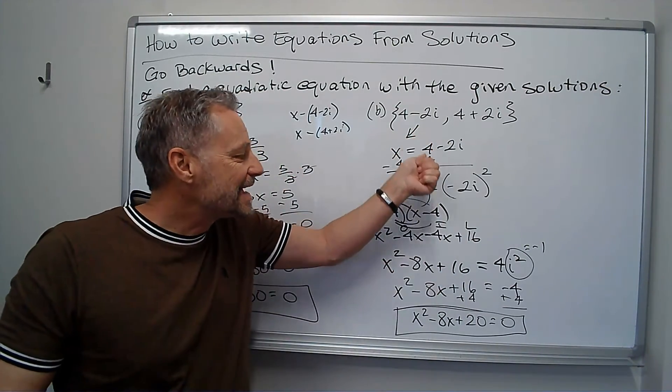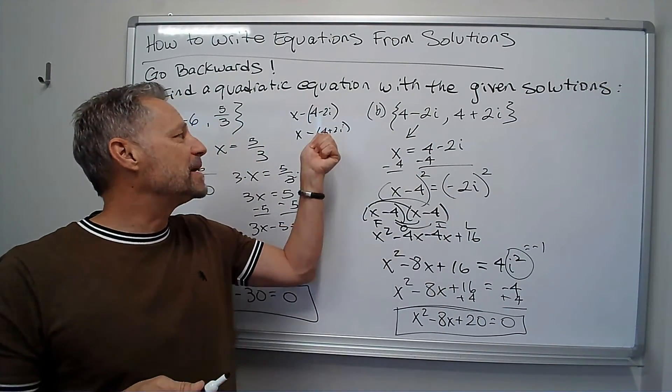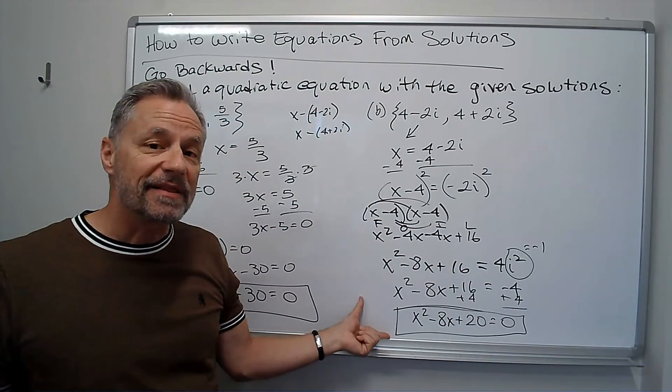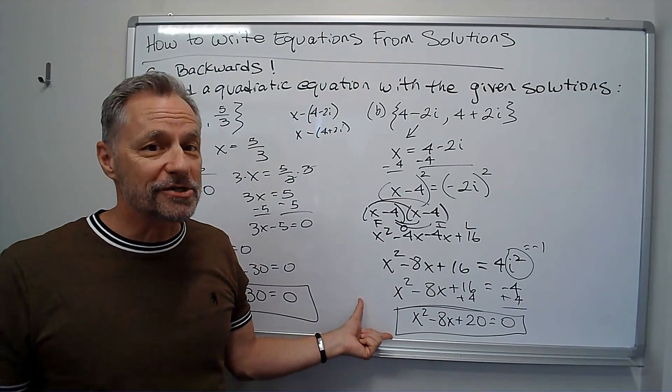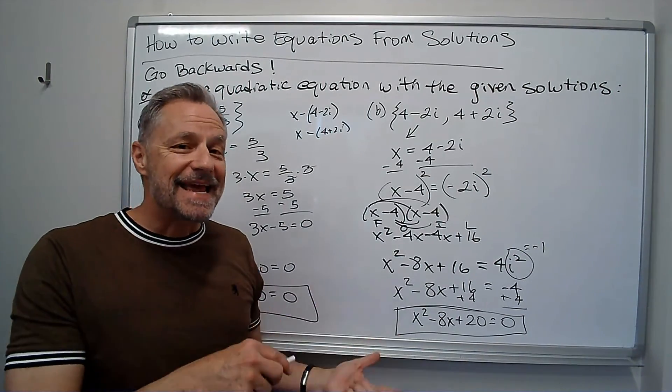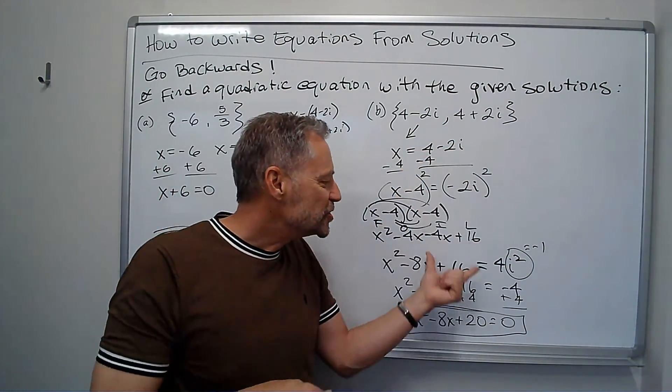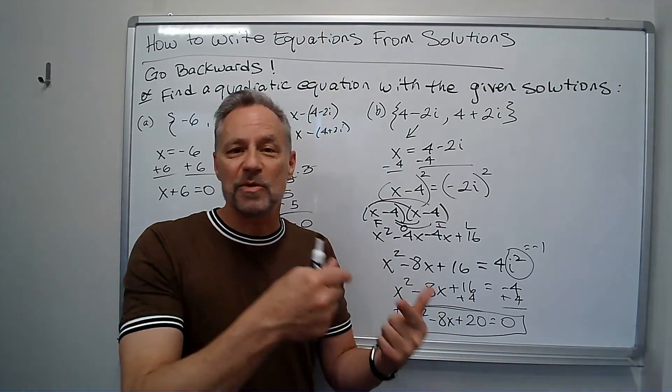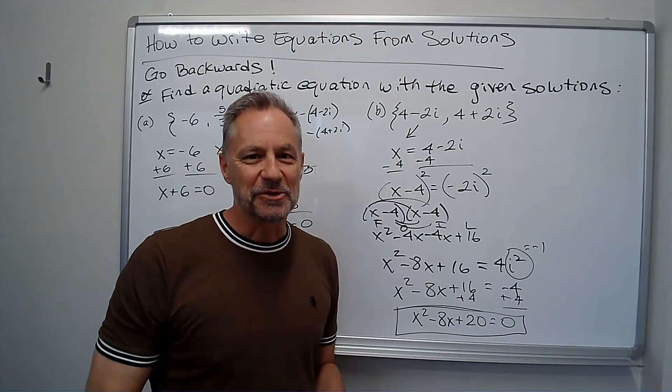I like this method much better than multiplying the complex factors directly. I wouldn't want to multiply that times that. It'll simplify to the same result, but it'll be a lot worse. So take a hint from Professor Monty. Do it this way. It'll make your life a lot easier. But the big key, go backwards to find the equation from the solutions.